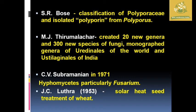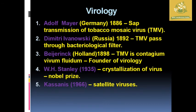In virology history: Adolf Mayer in 1886 described the sap transmission of Tobacco Mosaic Virus. Dmitry Ivanovsky, a Russian scientist in 1892, explained that TMV passes through a bacteriological filter. Beijerinck, a scientist from the Netherlands in 1898, gave the concept that TMV is 'contagium vivum fluidum' and is known as the founder of virology. WH Stanley in 1935 achieved crystallization of the virus and was awarded the Nobel Prize. Cassin in 1966 described the satellite virus.